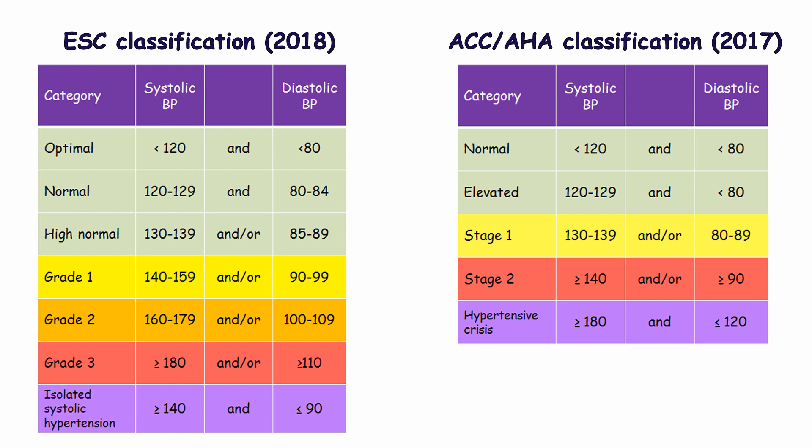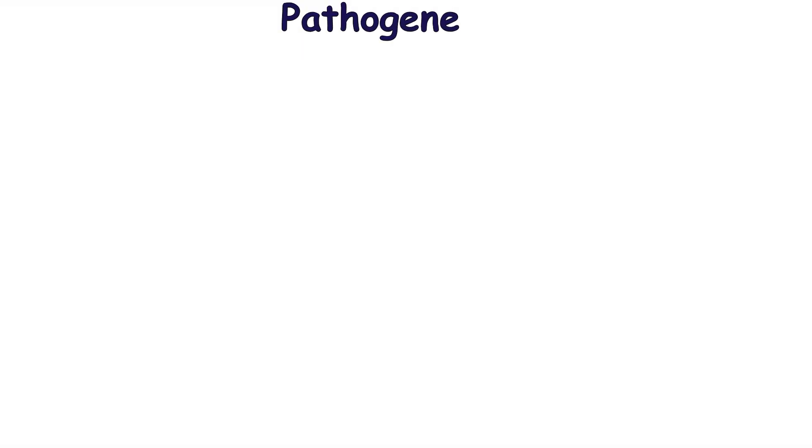According to the American College of Cardiology, blood pressure is classified as normal, elevated, stage 1 hypertension, and stage 2 hypertension. Normal blood pressure means less than 120/80 mmHg. Elevated blood pressure denotes systolic 120–129 mmHg and/or diastolic less than 80 mmHg. Stage 1 hypertension is diagnosed when systolic ranges from 130–139 mmHg and/or diastolic ranges from 80–89 mmHg. Stage 2 hypertension is diagnosed if systolic is 140 mmHg or more and/or diastolic is 90 mmHg or more.